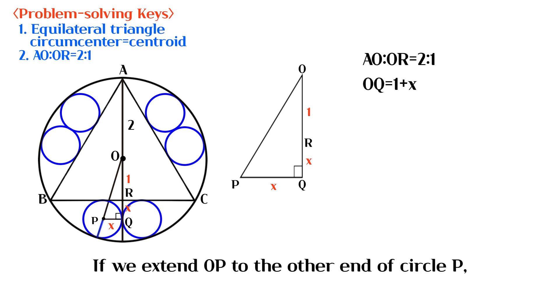If we extend OP to the other end of circle P, we can see that the length of OP is 2 minus X. Now we can find X by the Pythagorean theorem.